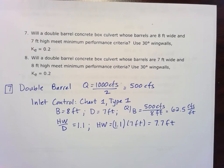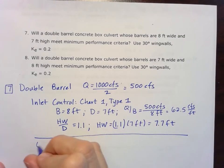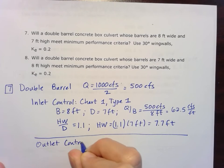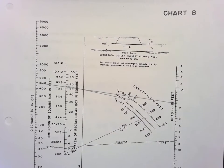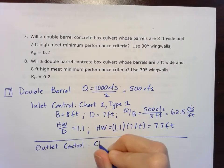Now let's go ahead and do our outlet control and we'll see which one governs, which one's bigger. So for outlet control, same scenario here. But we'll need to use a different chart since we're using our outlet control now. We're going to go ahead to Chart 8 for concrete box culverts flowing full.